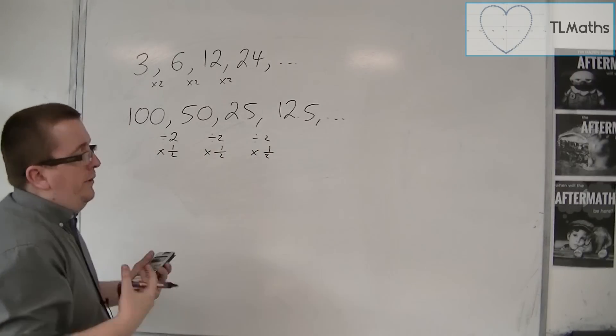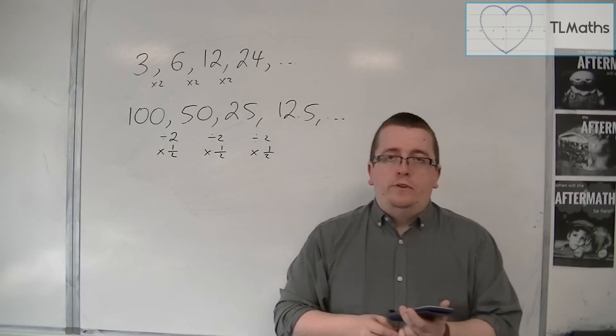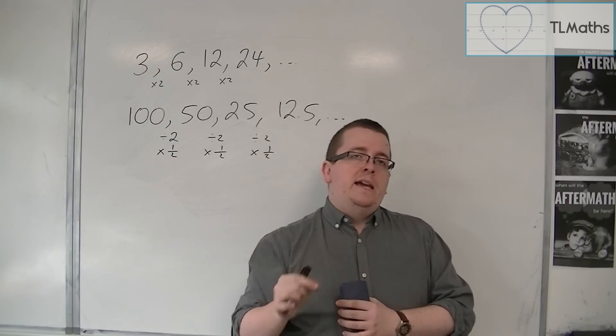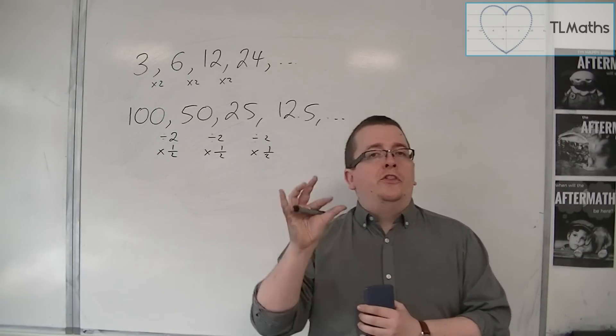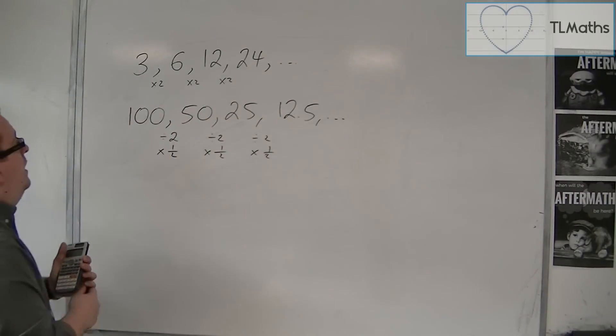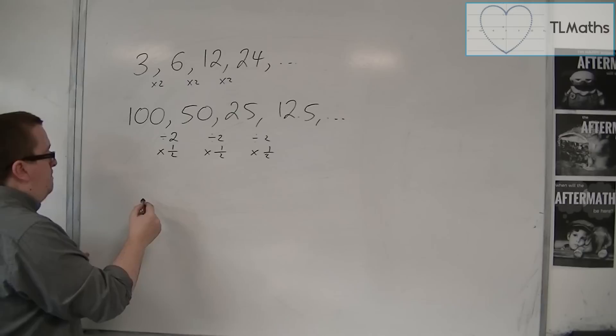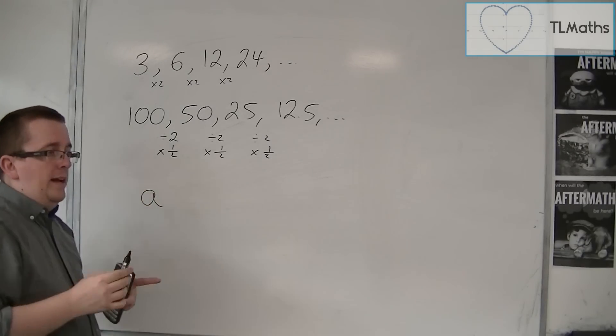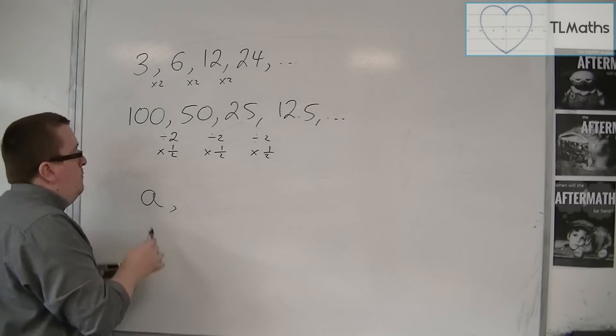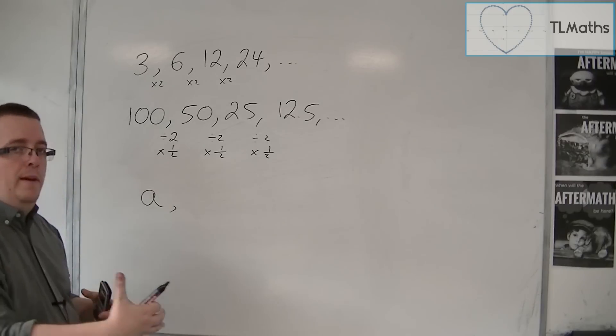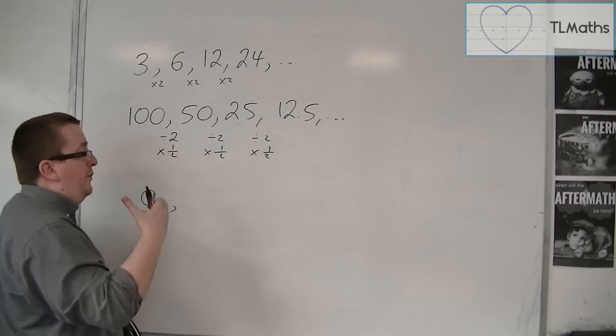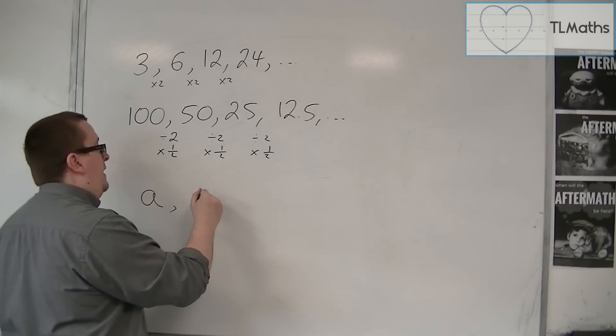So what we see is that instead of a common difference, we have a common number that we are multiplying by each time. And we refer to this as the common ratio. Because as we start off our sequence, we will start with the first term, which we'll call a again. But now, I'm not adding on d each time. I'm multiplying by this number. And this number, we will refer to as the common ratio, and we'll write it down as r.